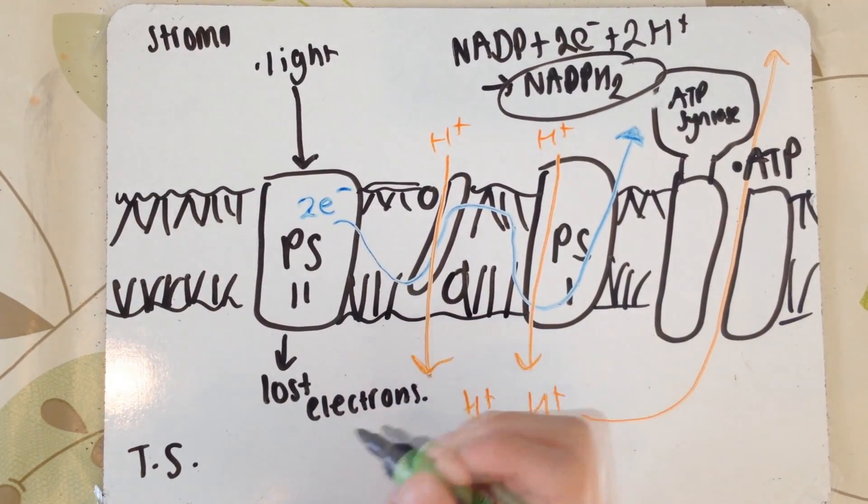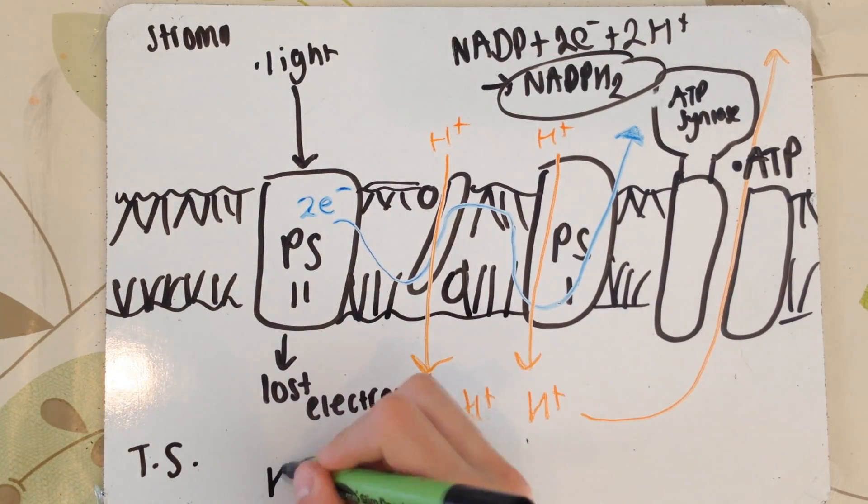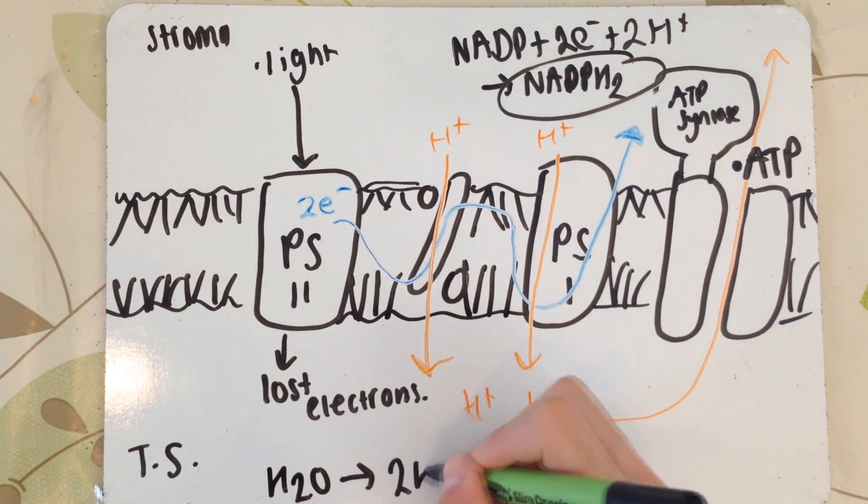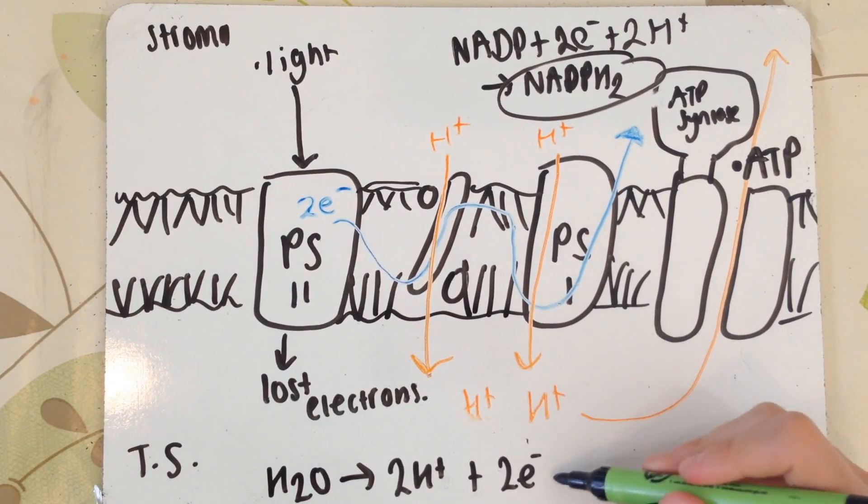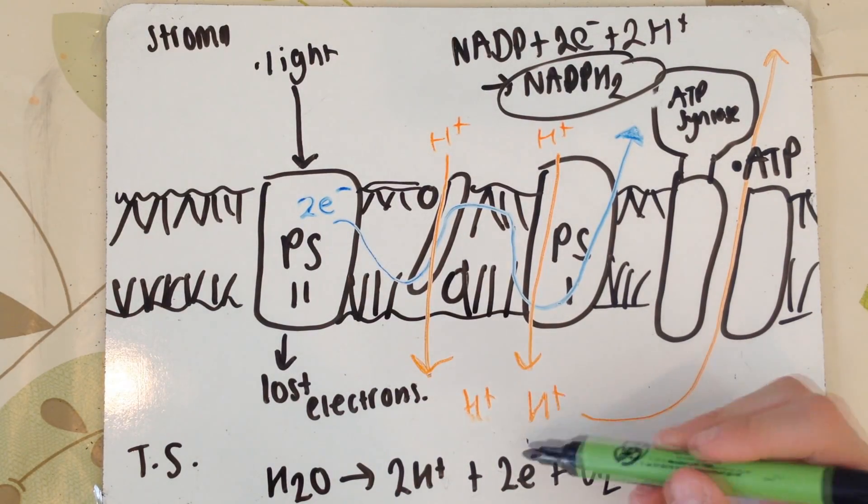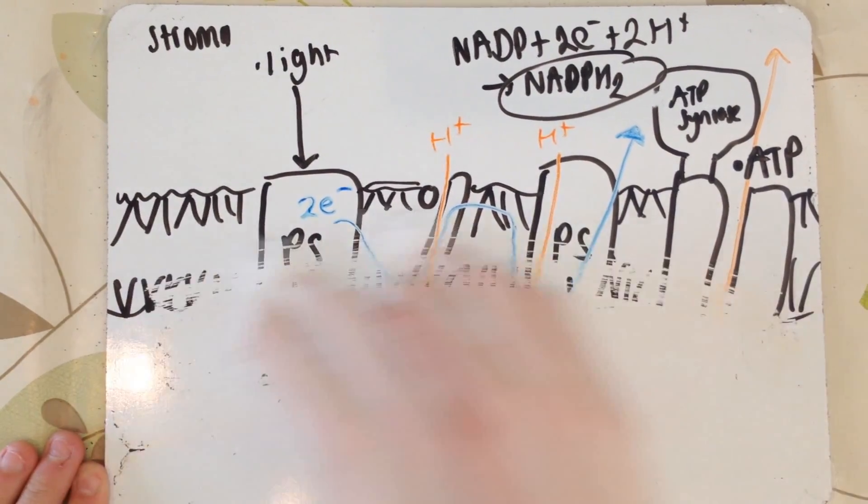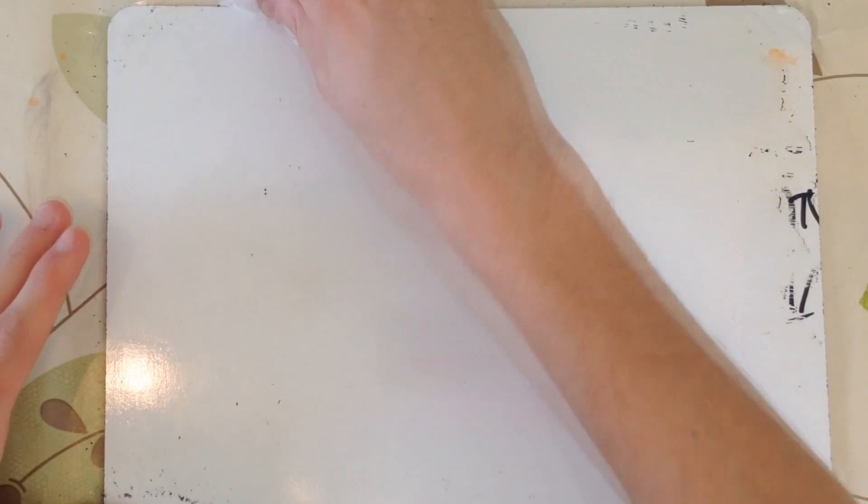Photosystem 2 has lost some electrons and needs to get these back. Where do these come from? The photolysis of water occurs, and that basically means H2O is split up into two electrons, two protons, and some oxygen. The electrons from that then replace those lost by photosystem 2 earlier on.